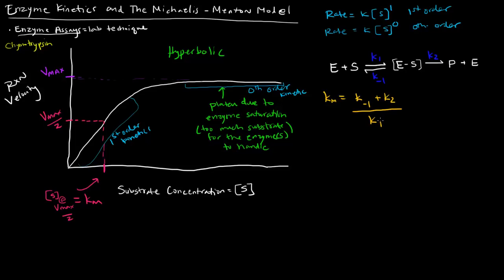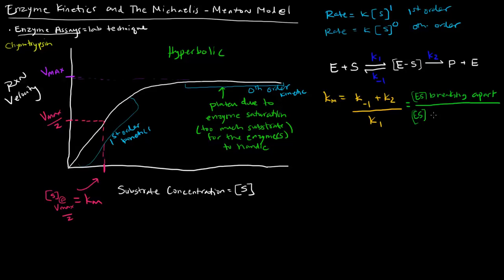What Km is actually equal to is Km = (K-1 + K2) / K1. K-1 and K2 are both rate constants for reactions that involve the dissociation or breaking up of the enzyme-substrate complex. K2 describes it breaking up into product and enzyme, whereas K-1 describes the breaking up of the enzyme-substrate complex back to E and S. The top value represents the enzyme-substrate complex breaking apart. K1 describes the formation of the enzyme-substrate complex - that value describes the complex either coming together or staying together.